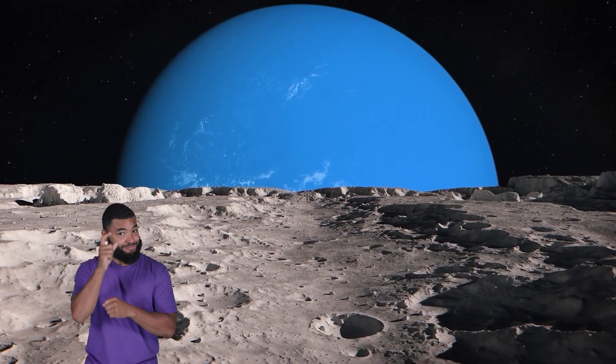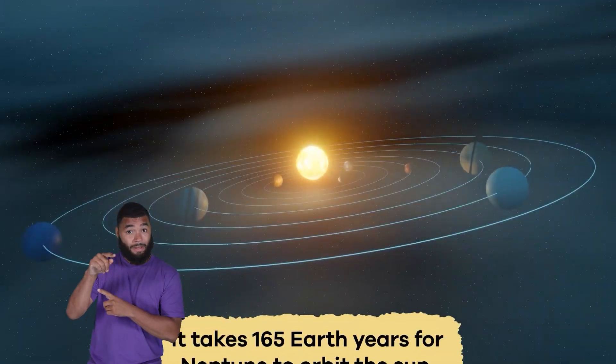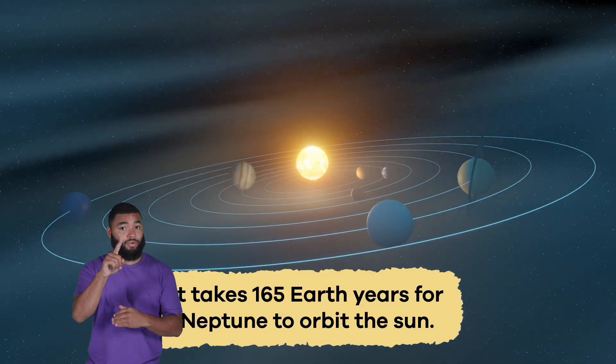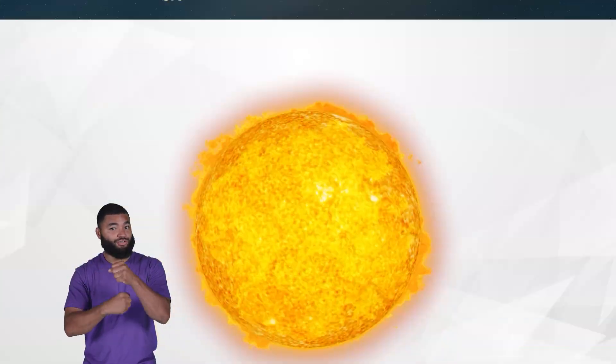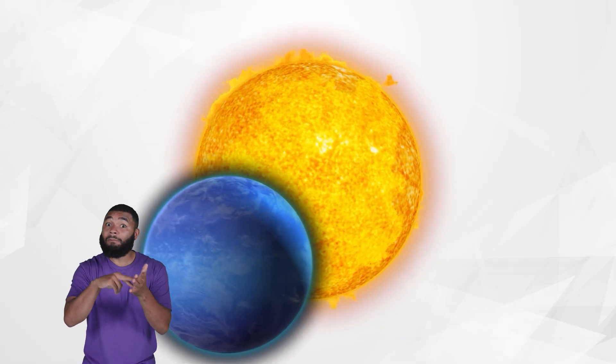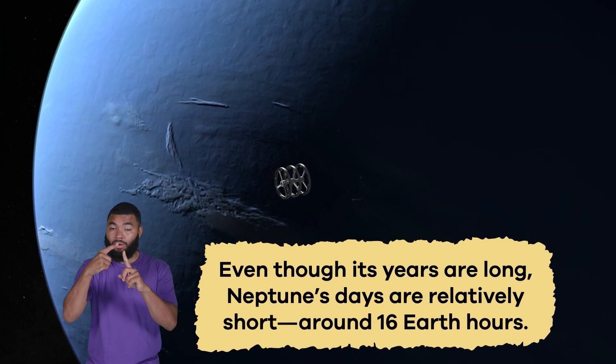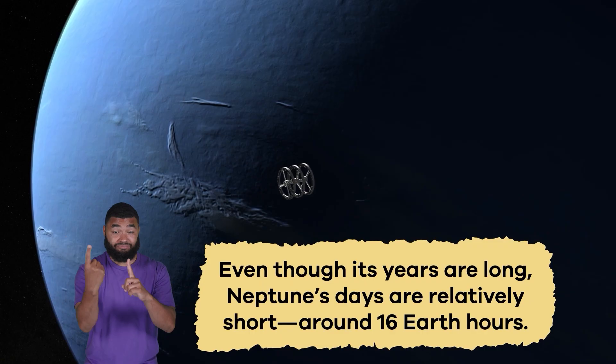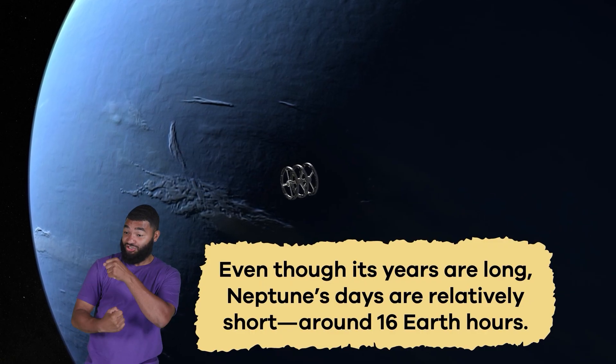Triton. A year on Neptune is really long. It takes 165 Earth years for Neptune to orbit the Sun. To put this into perspective, Neptune has only orbited the Sun one time since its discovery in 1846. Even though its years are long, Neptune's days are relatively short, around 16 Earth hours.